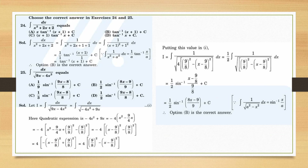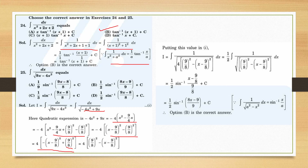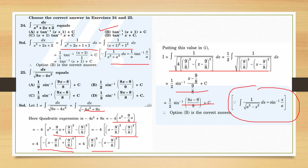For the MCQ question (choose correct answer): 1/(x² + 2x + 2) — complete the square to get (x+1)² + 1. This is x² + a² form, giving (1/a) tan⁻¹(x/a) + C. With a = 1, the answer is tan⁻¹(x+1) + C, so option B is correct. For the second MCQ with a negative quadratic, take the negative sign common, complete the square, flip terms to get a² − x² form, giving sin⁻¹ form. Option B is again correct.